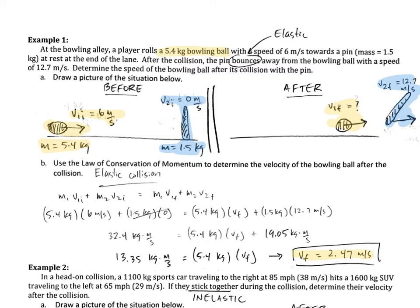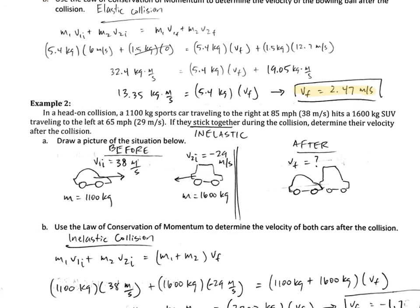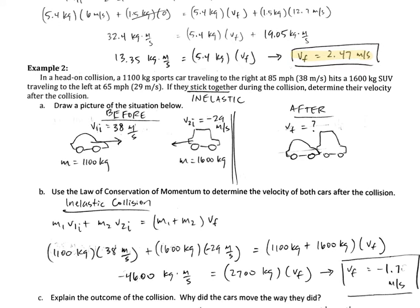Let's try another example. In a head-on collision, an 1100 kilogram sports car traveling to the right at 85 miles per hour or 38 meters per second hits a 1600 kilogram SUV traveling to the left at 65 miles per hour or 29 meters per second. As they hit each other, they're going to stick together during the collision. Determine their velocity after the collision — we don't even know which way they'll go, right or left.